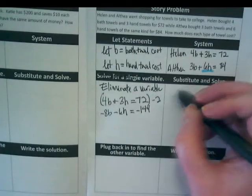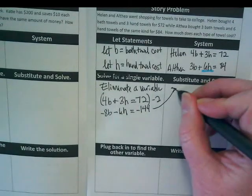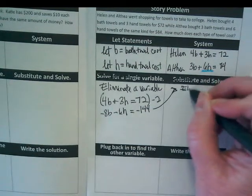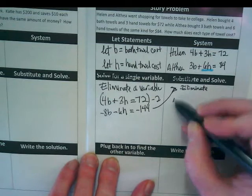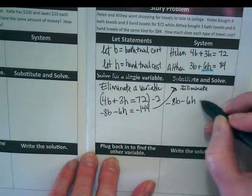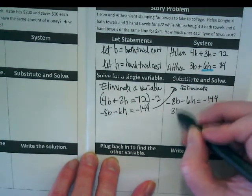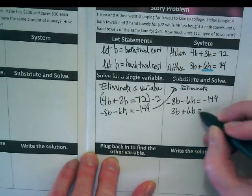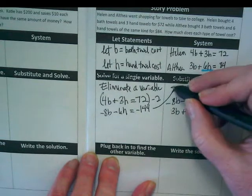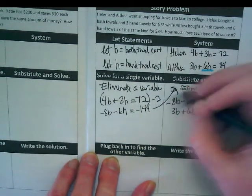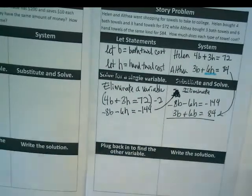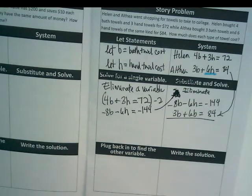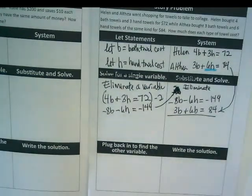And I get negative 8b minus 6h equals, like we calculated it in the second period, negative 144. Now I'm going to take that equation and I'm going to rewrite it over here. I'm not substituting and solve. I'm going to eliminate. I'm going to take negative 8b minus 6h equals negative 144. And I'm going to put the second equation underneath it.